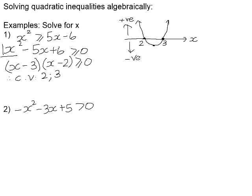We're looking for where the graph is positive — that's above the x-axis, which is this arm and this arm of the graph. That means all values to the left of positive 2 and all values to the right of positive 3. So x is less than or equal to 2 — we take the sign from the original question — or x is greater than or equal to positive 3.